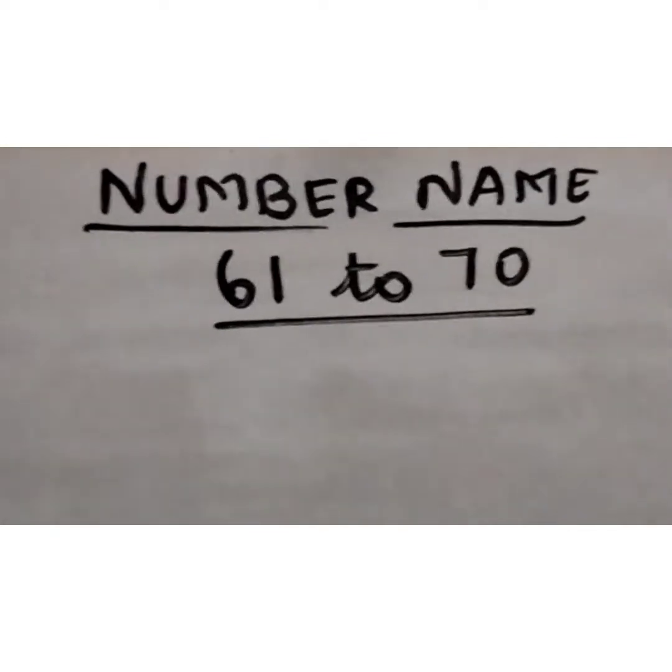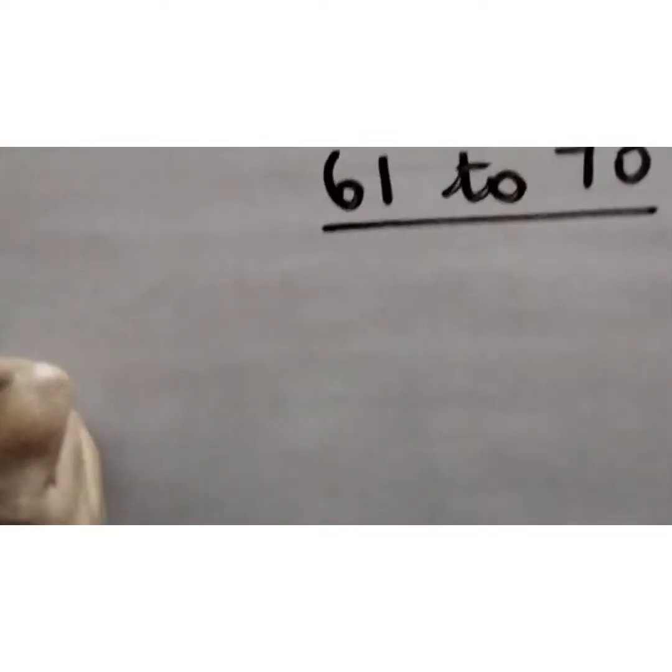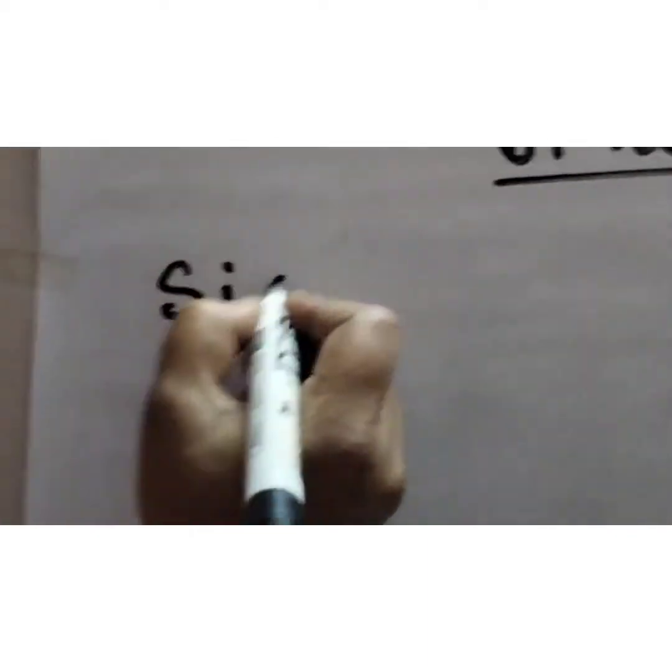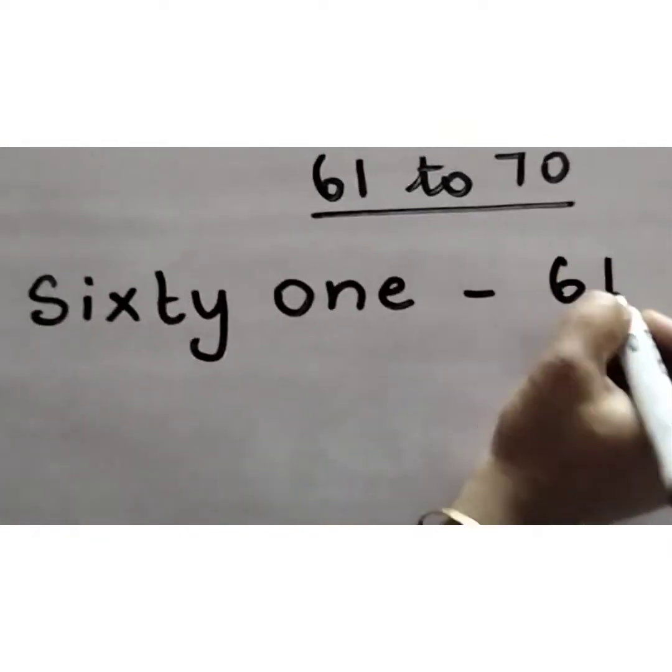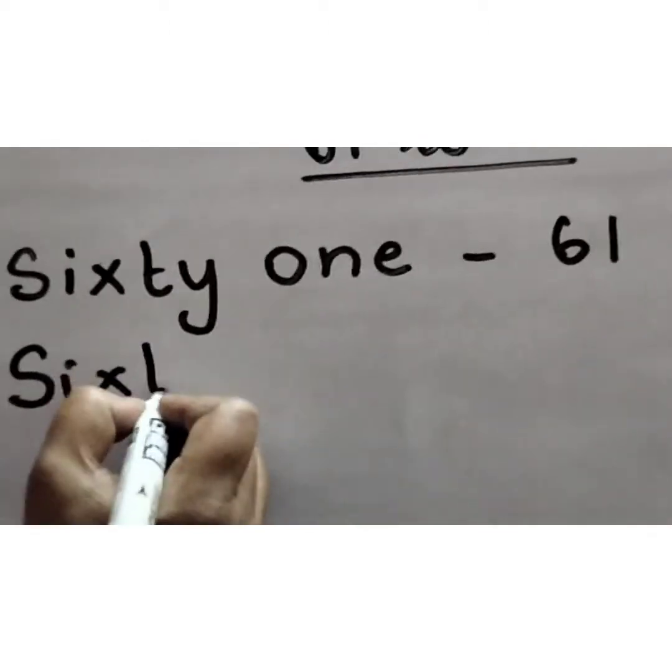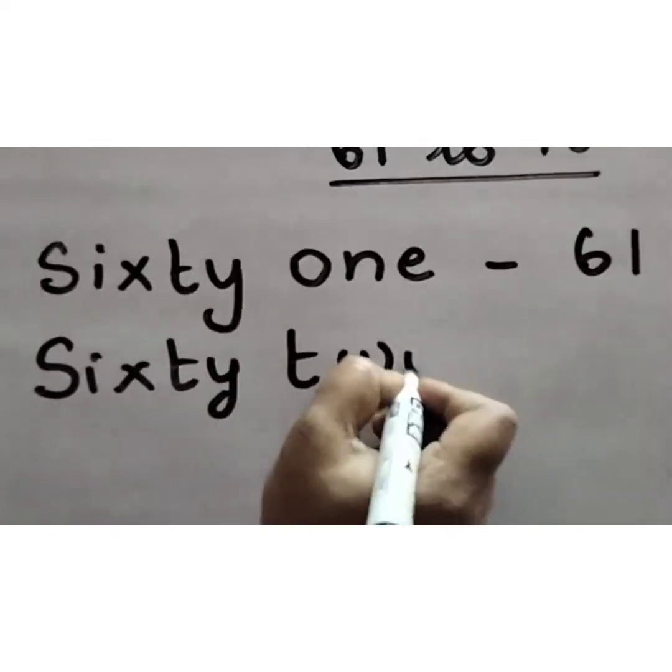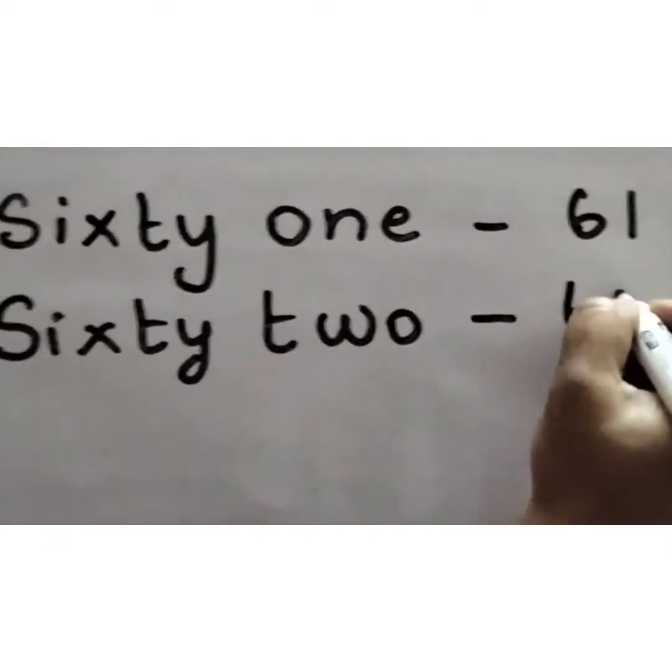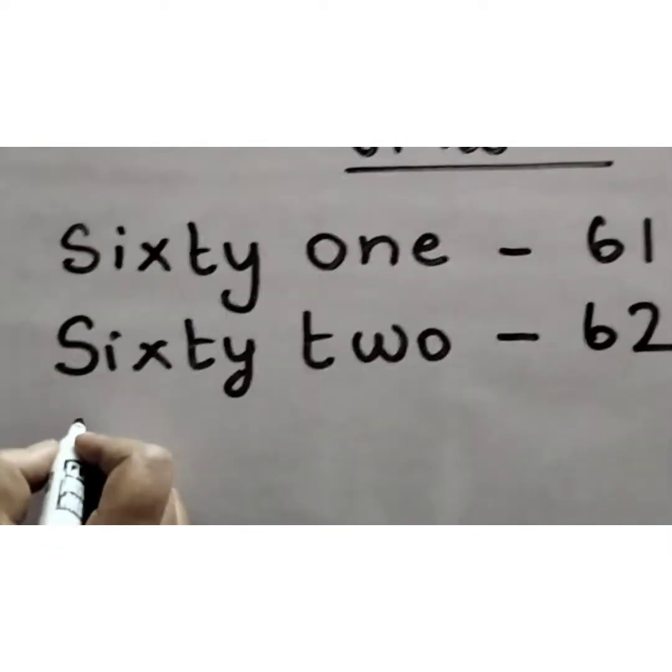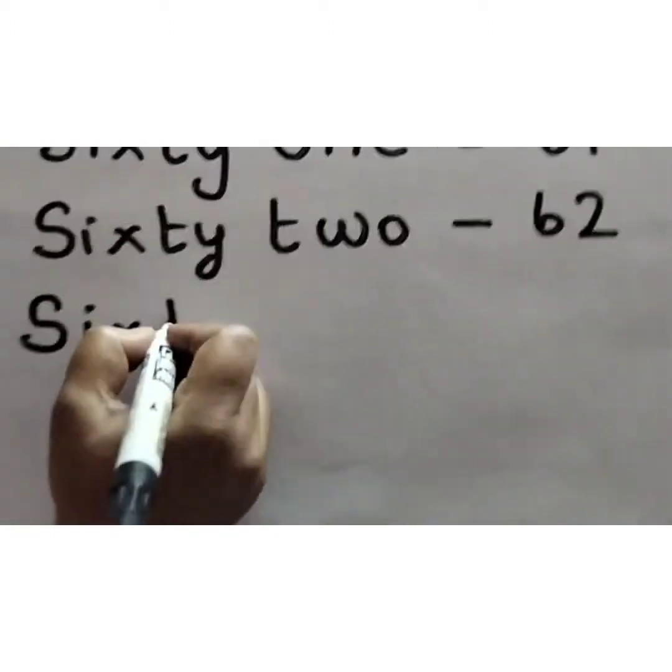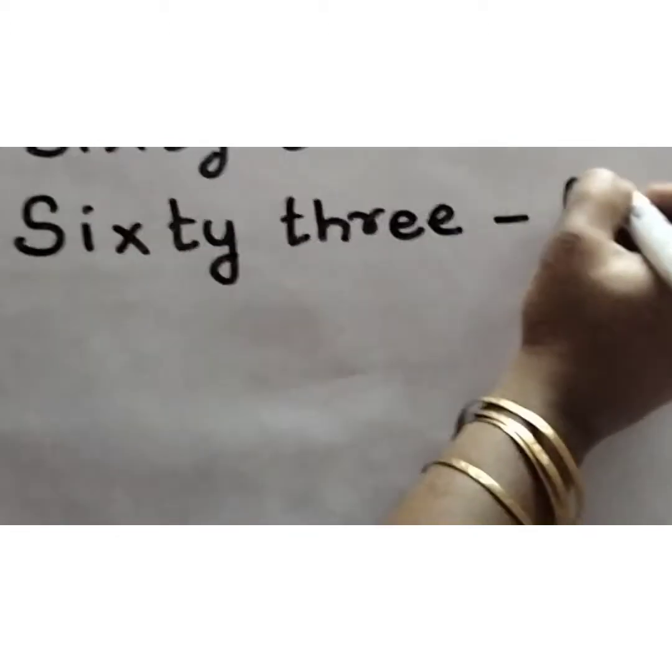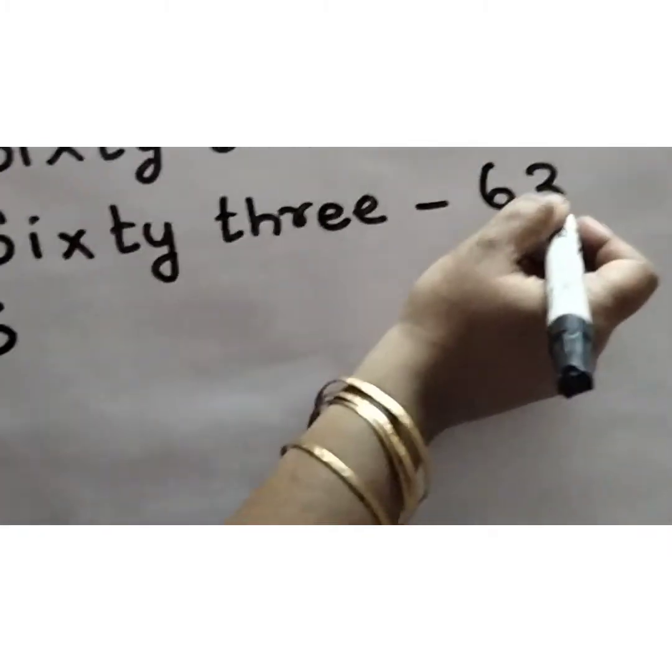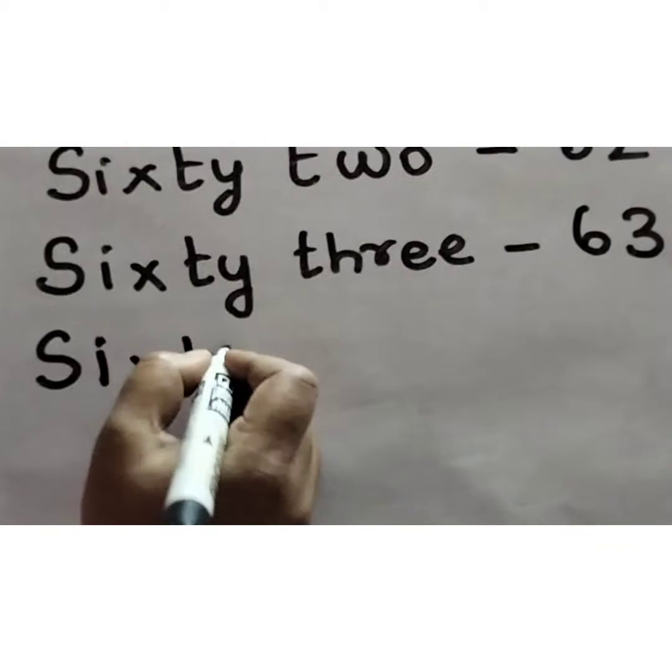The next is number name from 61 to 70. Sixty-one. S-I-X-T-Y O-N-E, 61. Sixty-two. S-I-X-T-Y T-W-O, 62. Children, you have to be very thorough with this number names. So only I am writing each and everything on the board. Okay, children? So while writing, please say and write. Sixty-three. S-I-X-T-Y T-H-R-E-E, 63.